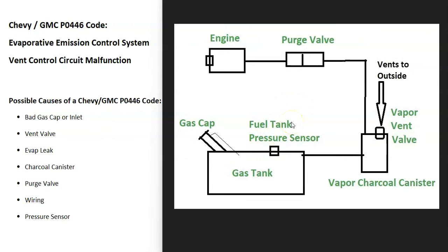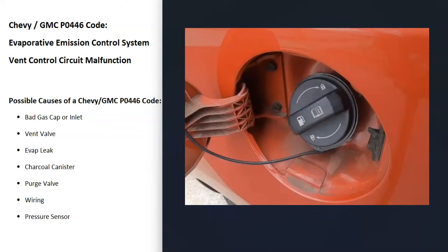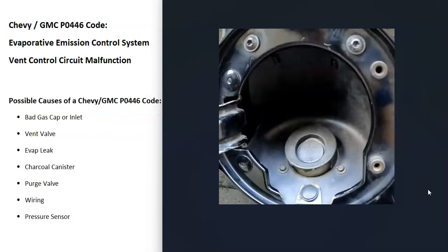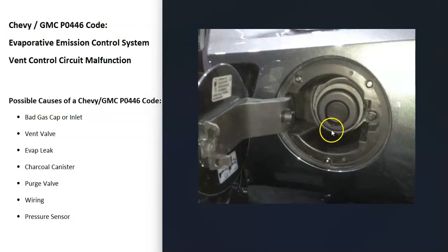This whole system needs to be sealed or it can cause issues. The gas cap is part of this — it needs to seal up correctly. So the first thing to check is the gas cap. Be sure it looks good, there are no cracks, it's not damaged, and it's sealing correctly. This includes the newer Chevys and GMCs that don't have a traditional gas cap — just go check it out and be sure everything is sealing correctly, because if it's leaking it will cause an EVAP leak.